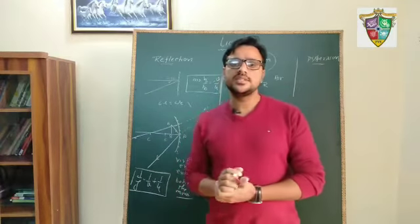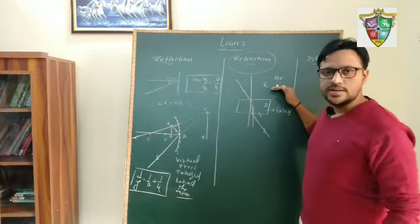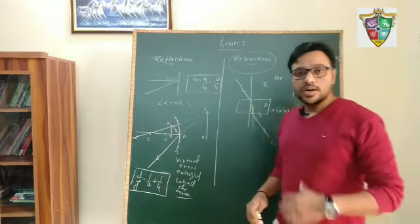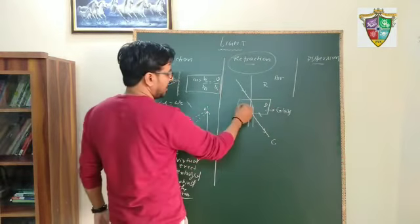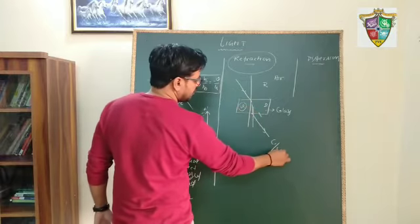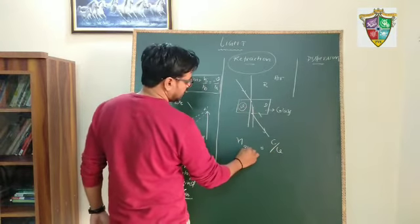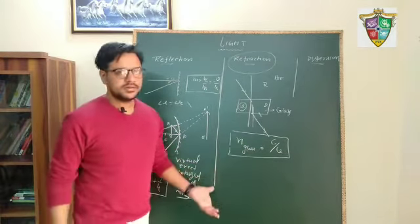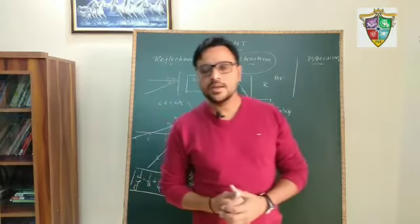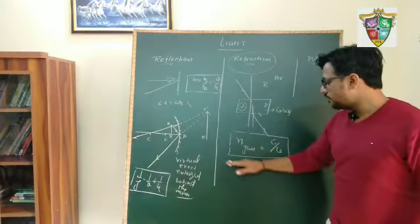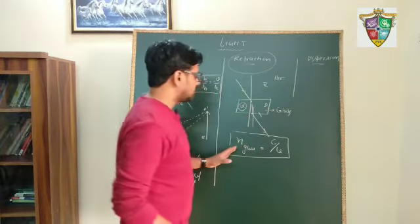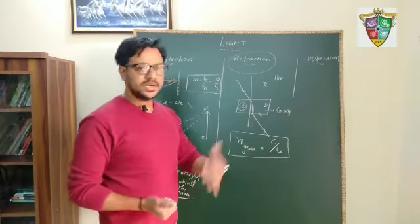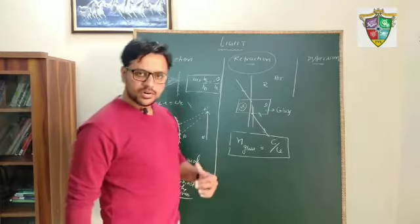What is the cause of refraction? It is the change in the speed of light. When light passes through air, it has some speed C. When it passes through another medium like glass, the speed of light is V. The ratio C/V is the refractive index of glass — the absolute refractive index of glass. The change in speed of light is the reason behind refraction. Refractive index tells how much the speed of light decreases when it passes from air to that particular medium.